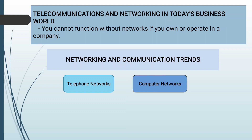Telephone networks and computer networks are the two primary kinds of networks utilized by businesses in the past. Before, voice communication was handled by telephone networks while data traffic was managed by computer networks. Today, telephone and computer networks are merging into a unified digital network utilizing common internet-based protocols and equipment, as a result of ongoing telecommunications deregulation and information technology innovation. Today's telecommunications companies like AT&T and Verizon provide voice service, data transfer, internet access, cellular telephone service, and television programming.